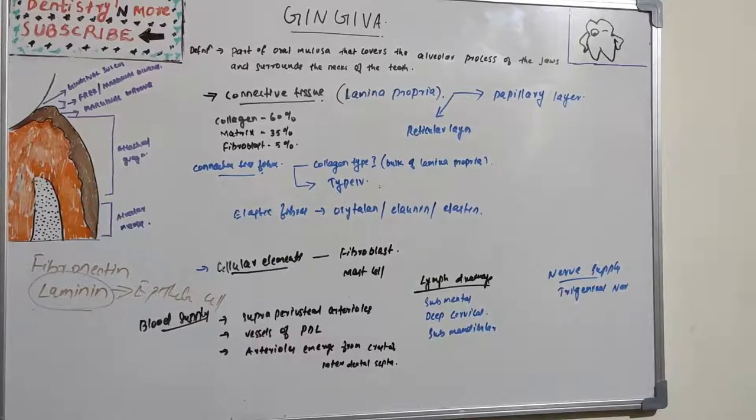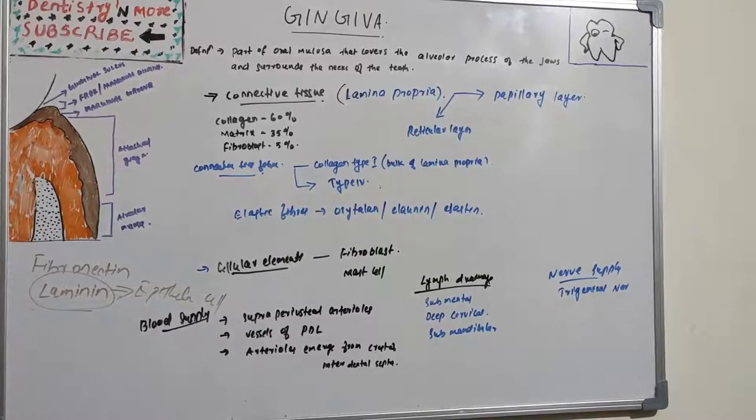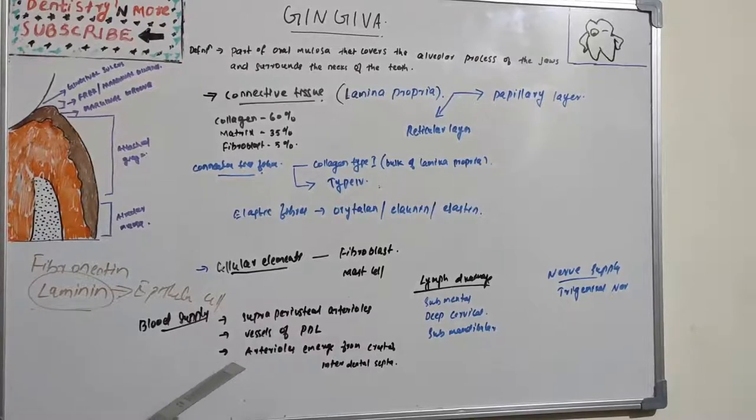It regulates collagen degradation through phagocytosis. We also have mast cells which are numerous in connective tissue, and also we have fixed macrophages and histiocytes, and also adipose cells and eosinophils, neutrophils, plasma cells and lymphocytes.